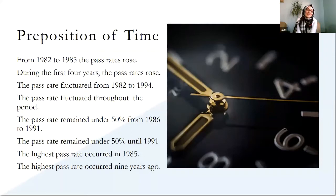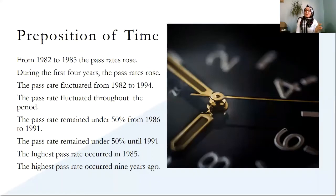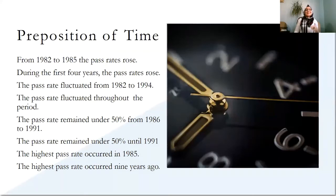Our second sentence is: 'During the first four years, the pass rates rose.' 'The pass rates fluctuated from 1982 to 1994.' 'The pass rate fluctuated throughout the period.' 'The pass rates remained under 50% from 1986 to 1991.' As you can see, if we're given two dates, we must use the two in between, and 'from' and 'in' are very, very important. 'The pass rate remained under 50% until 1991.' 'The highest pass rate occurred in 1985.' 'The highest pass rate occurred nine years ago.' Using these prepositions is very important.